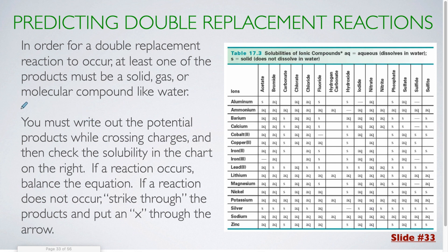Next, I'm going to show you how to predict the products for a double replacement reaction. In order for a double replacement reaction to occur, we know that we have to get a solid, a gas, or a molecular compound like water. You must write out the potential products first while crossing charges, and then you're going to check the solubility chart on the right. There are a whole bunch of solubility rules you could also learn, but as long as you can use this chart here, you should be able to figure out whether your products are solid or aqueous.